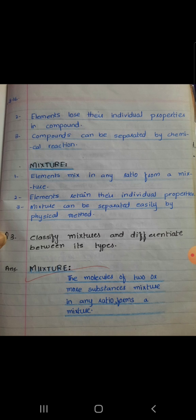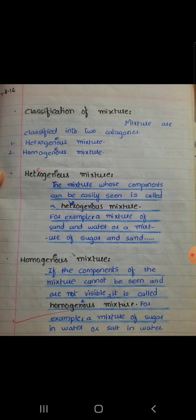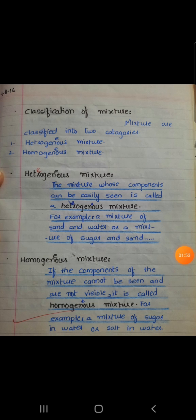Question number 3: classify mixture and differentiate between its types. Mixture — the molecules of two or more substances mixing in any ratio forms a mixture. Classification: mixture is classified into two categories — heterogeneous mixture and homogeneous mixture. Heterogeneous mixture: the mixture whose components can easily be seen is called a heterogeneous mixture, for example a mixture of sand and water or a mixture of sugar and sand. Homogeneous mixture: if the components of a mixture cannot be seen and are not visible, it is called a homogeneous mixture, for example a mixture of sugar in water or salt in water.